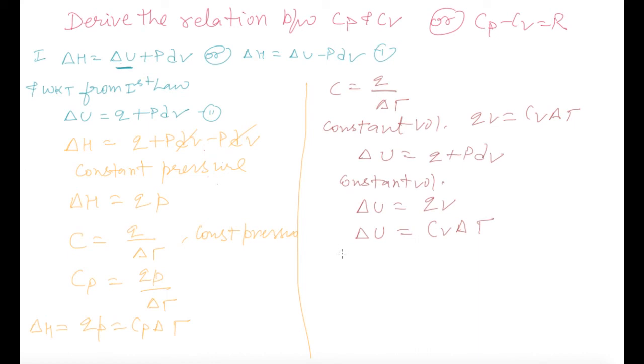Now take the enthalpy equation again. Delta H is equal to delta U plus PdV. Now from this first equation, in place of delta H we can put Cp delta T, and in place of delta U we can put Cv delta T, and PdV is equal to R delta T.